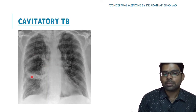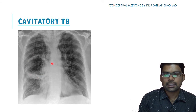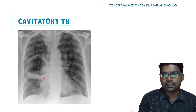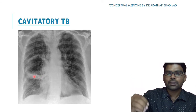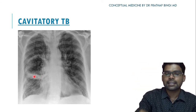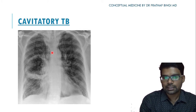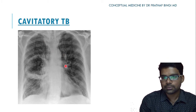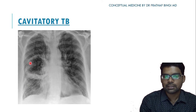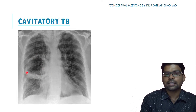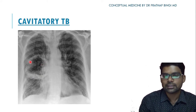This X-ray shows cavitary tuberculosis. There is a large round cavity in the mid zone with destruction of lung tissue and debris filling the cavity, giving a density similar to the heart. The remaining lung fields show some infiltrates. Cavitary lesions may be due to tuberculosis, fungal diseases, connective tissue disorders like Wegener's granulomatosis, or other infections.